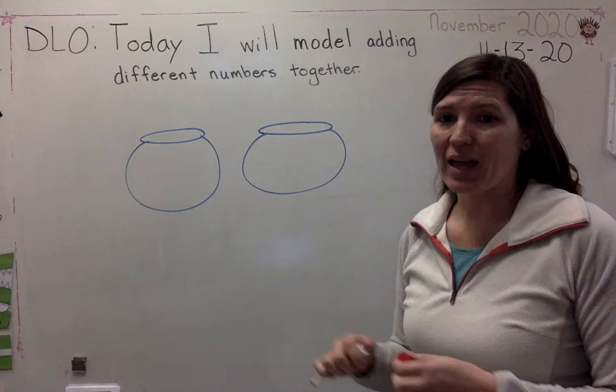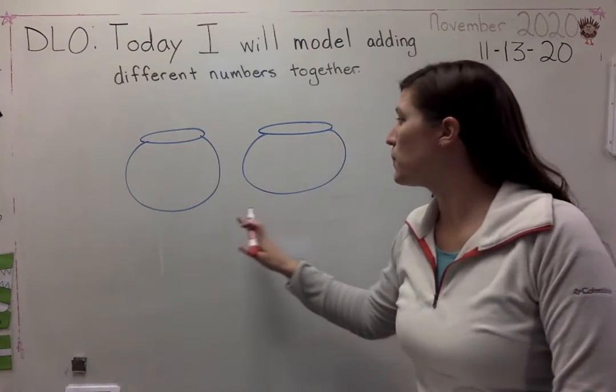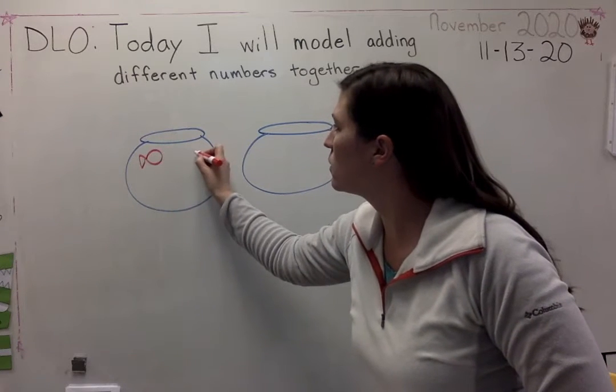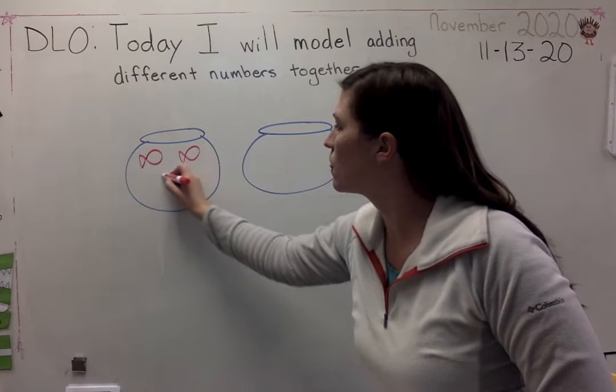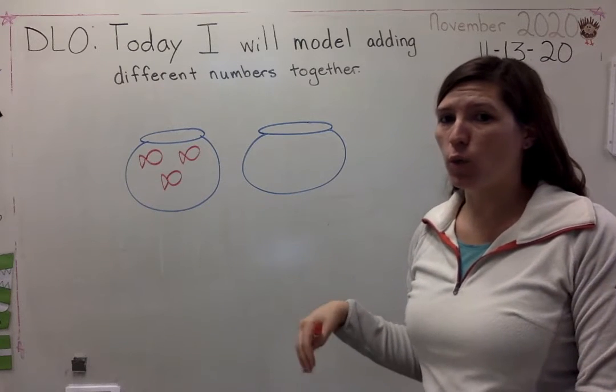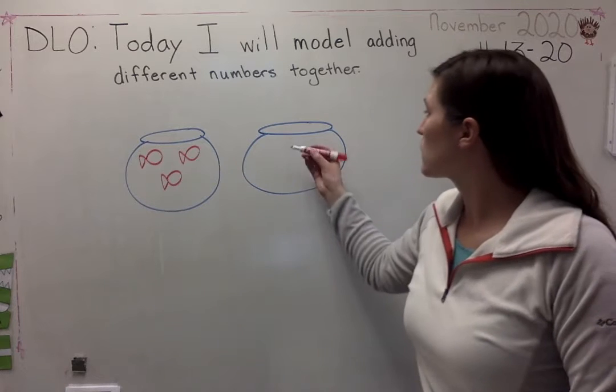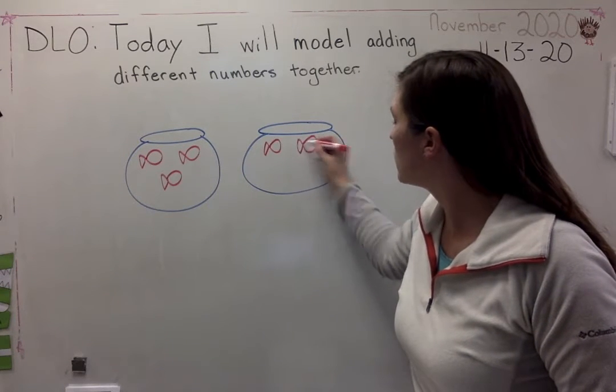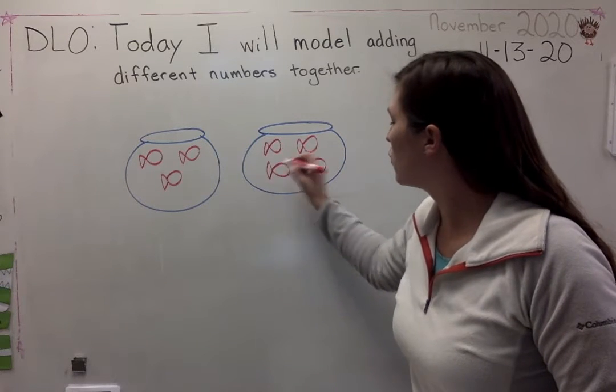So how can I show my story? By modeling. We can model to show the story that I'm talking about. So I said that I had three fish. So I'll model it by drawing pictures first. I had three fish. One, two, three. I had three fish. My friend gave me a fishbowl with four more fish. How many more? Four. One, two, three, four.